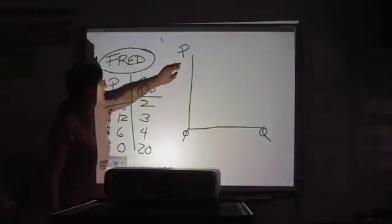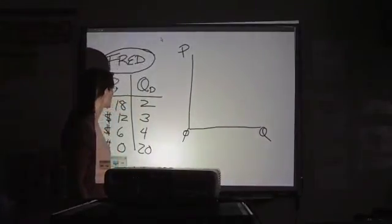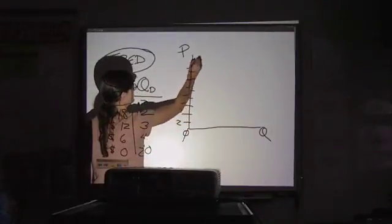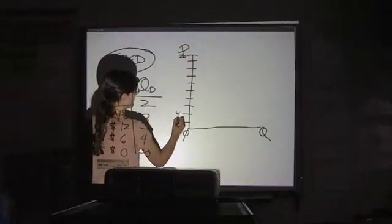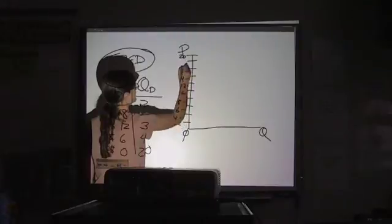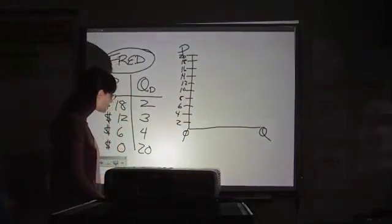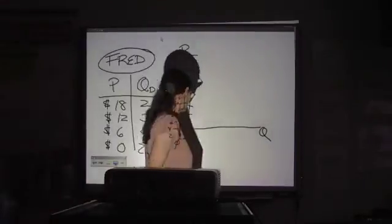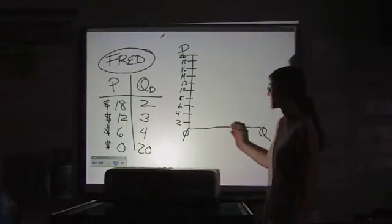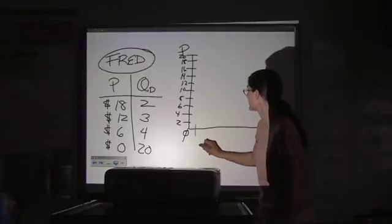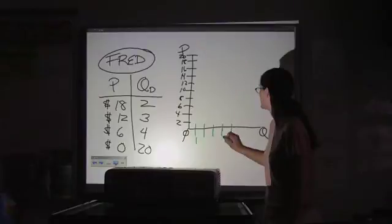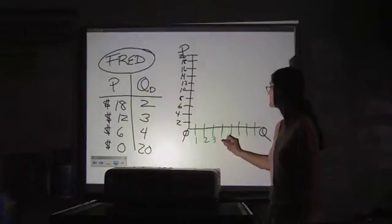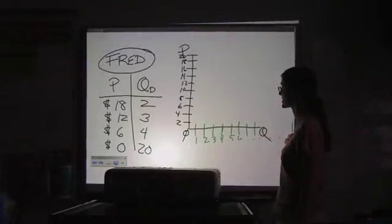So, price is independent, and the price determines the quantity. Let's put some numbers on here. And let's go up in increments. And if we go with quantity along the bottom, you don't have to have the same scale, as long as it's consistent. So, let's start with 1, and then 20 is going to be way out here somewhere.